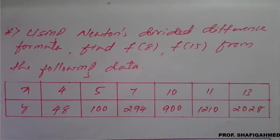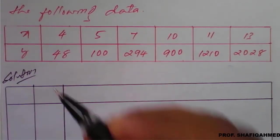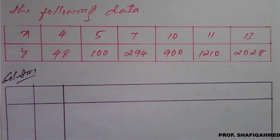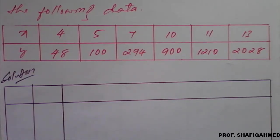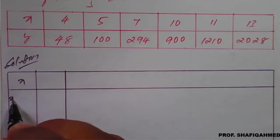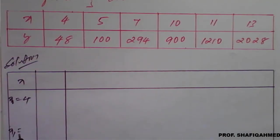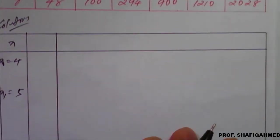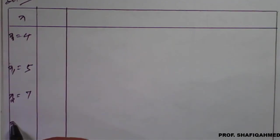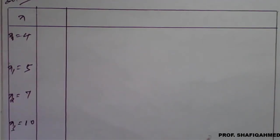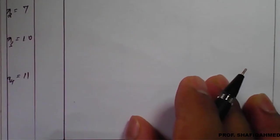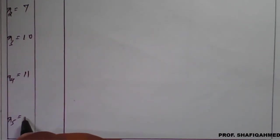Let us see the solution. We will prepare a table. Given x values: x naught is 4, x1 is 5, x2 is 7, x3 is 10, x4 is 11, and x5 is 13.